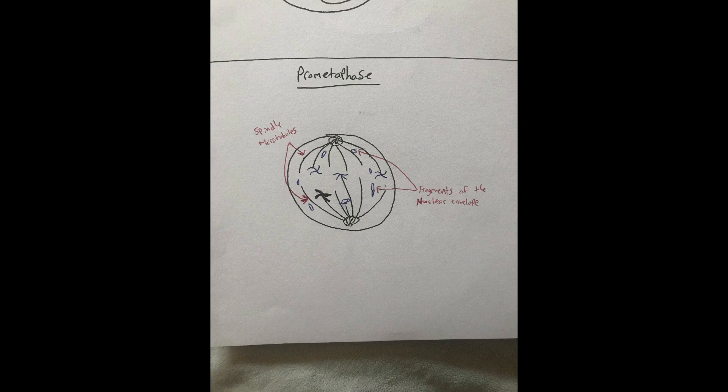Next is prometaphase. During prometaphase, the nuclear envelope breaks into fragments which disappear. The spindle microtubules reach out into the nuclear region and attach to a chromosome. Chromosomes also start to near the center of the cell.